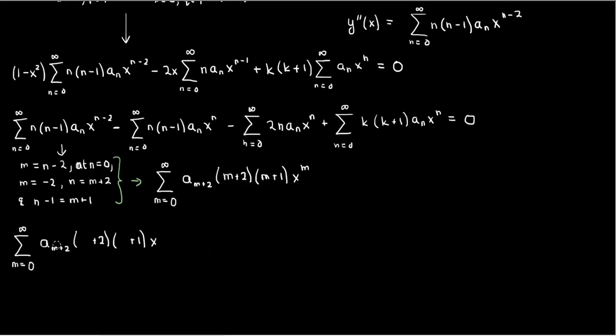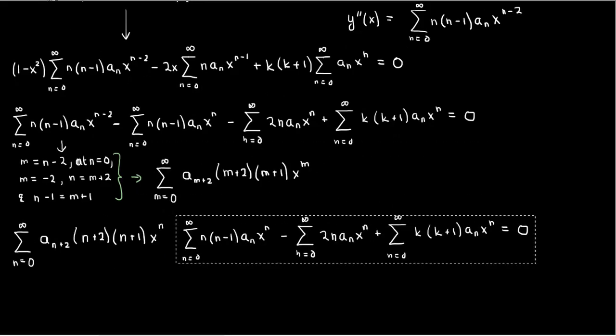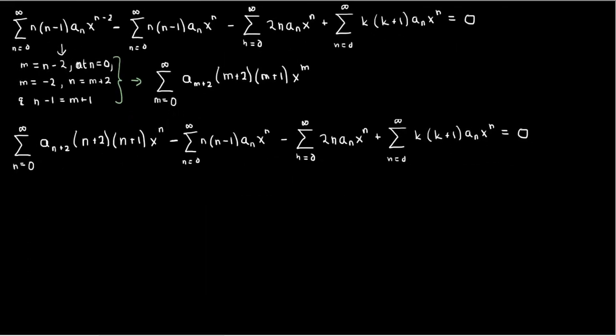Plugging this back into the ODE, we get: the sum from n equals 0 to infinity of a sub n+2 times (n+2)(n+1) times xⁿ, minus the sum of aₙ times n times (n minus 1) times xⁿ, minus the sum of 2aₙ times n times xⁿ, plus k times (k+1) times the sum of aₙ times xⁿ, all equals 0. We've renamed the index from m back to n for simplicity.